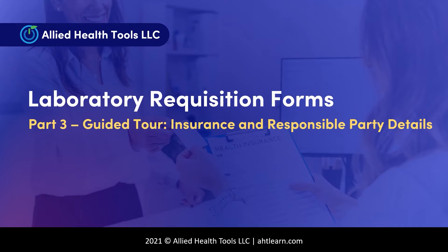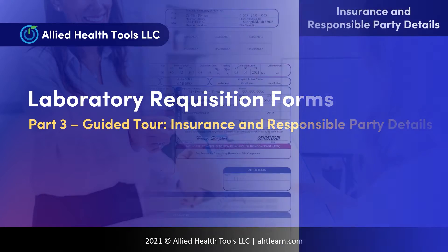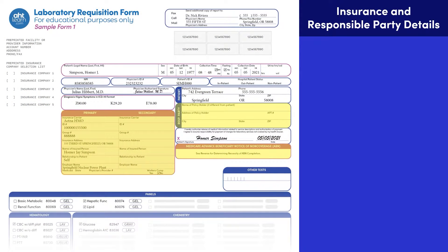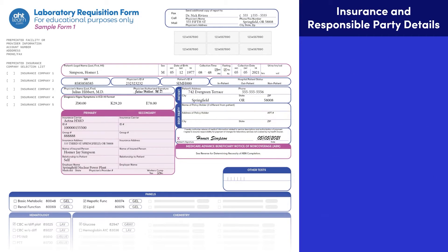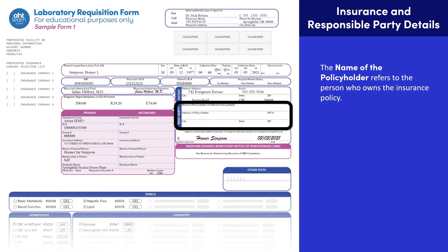Now that you understand the patient details category, let's explore the insurance and responsible party category. The information in this category helps us answer the question: who will pay the bill for lab testing services? This category usually includes data from the patient's insurance ID card, along with other medical record details relevant to billing. In the responsible party area, the policyholder refers to the person who owns the insurance policy, can make changes to the policy, and usually pays the insurance premiums that keep the coverage active. Other names for a policyholder include insured and subscriber.